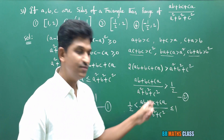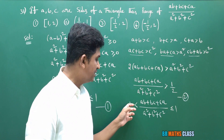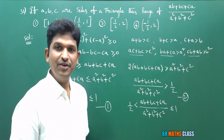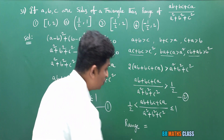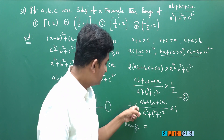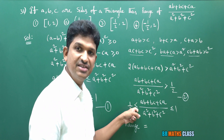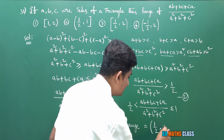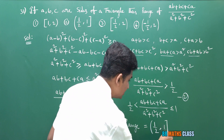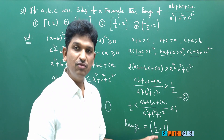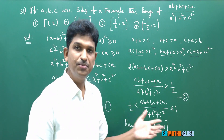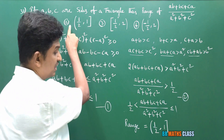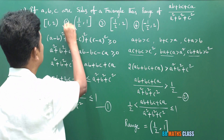From conditions one and two, the function lies strictly above 1/2 and at most equal to 1. Since the lower bound is strict (greater than, not equal to) and the upper bound holds with equality, the range is the half-open interval (1/2, 1]. The second option is the correct answer.